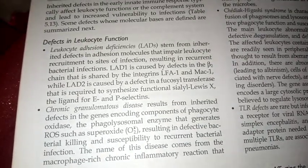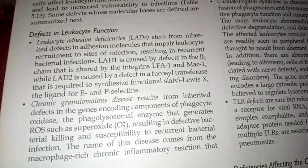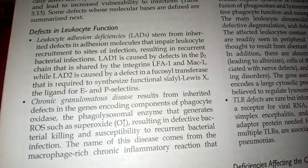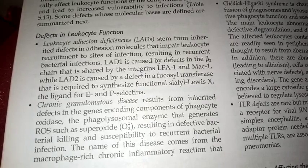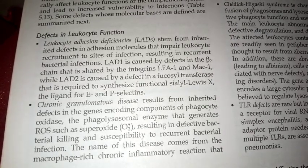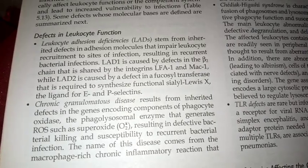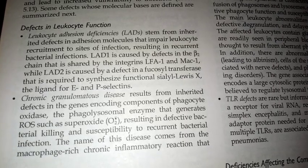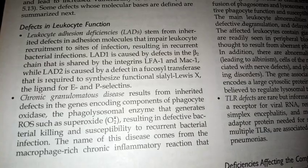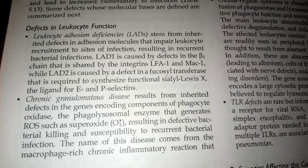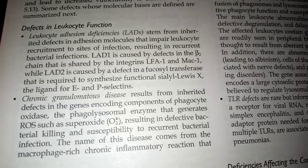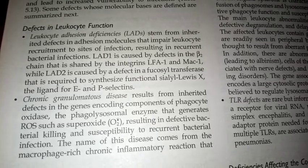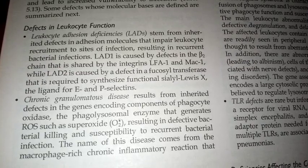The first defect is leukocyte adhesion deficiencies, also known as LAD. LAD stems from inherited defects in adhesion molecules that impair leukocyte recruitment to the site of infection, resulting in recurrent bacterial infections. LAD1 is caused by a defect in the beta-2 chain shared by the integrins LFA-1 and MAC-1, while LAD2 is caused by a defect in a fucosyltransferase required to synthesize functional sialyl-Lewis X, the ligand for E and P selectins.